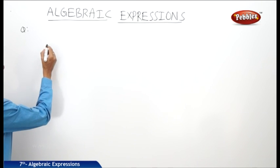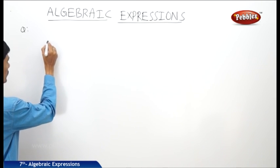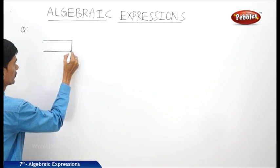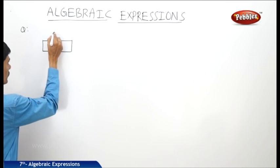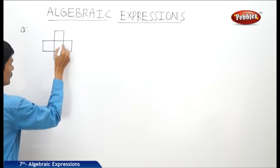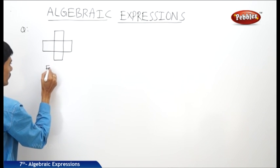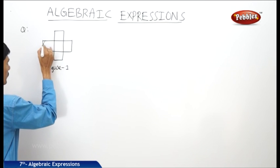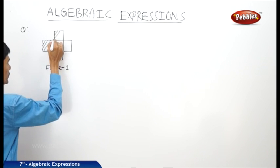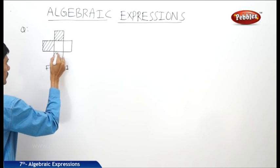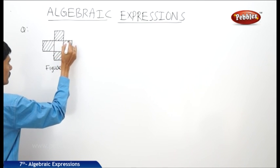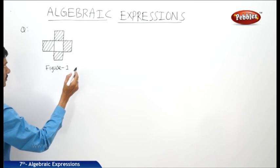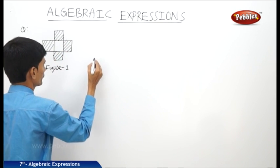Some patterns are given here. In the given pattern, there are colored tiles and white tiles. In figure 1, there are four colored tiles — or shaded tiles — and one white tile. Then in the next pattern, figure 2, there are also colored tiles and one white tile.